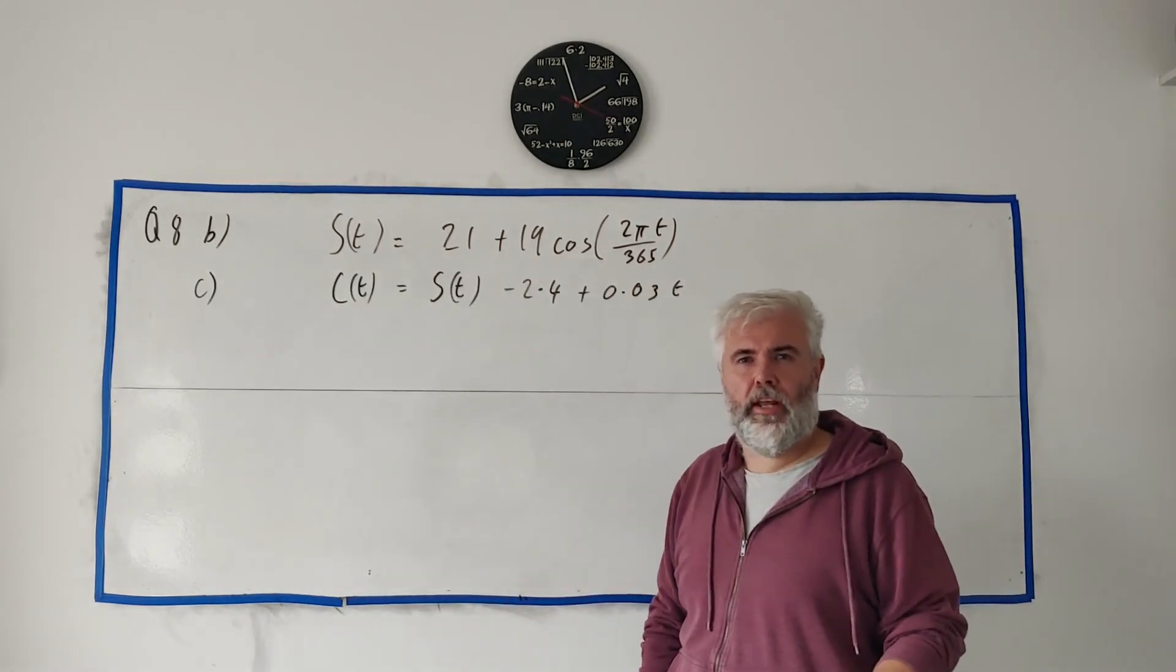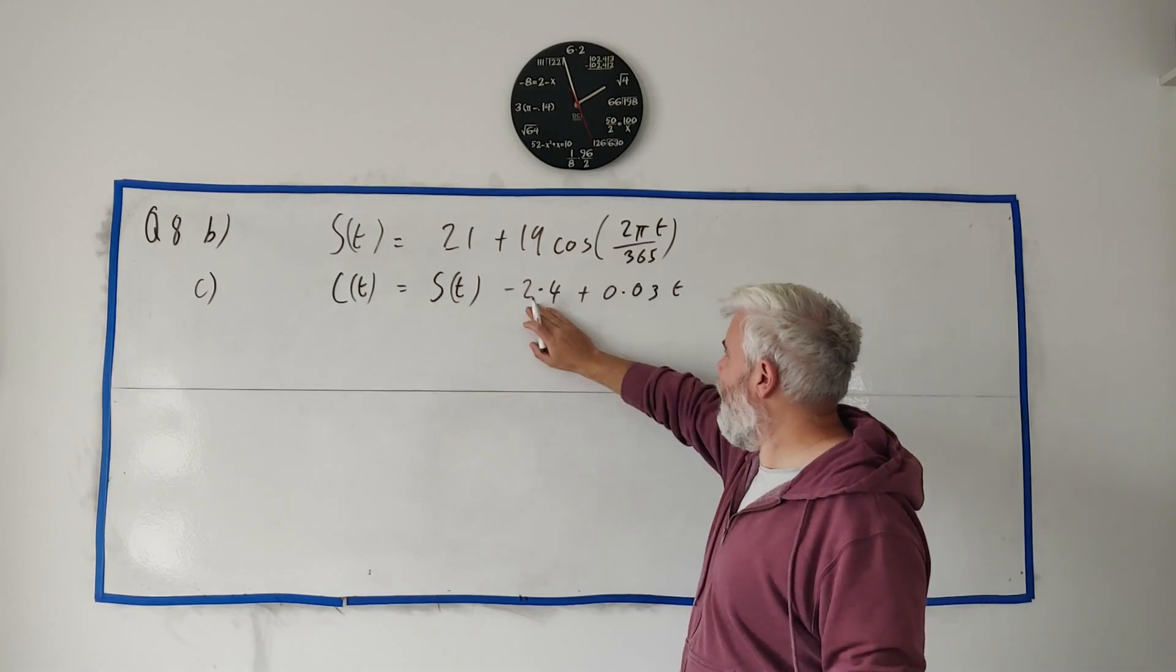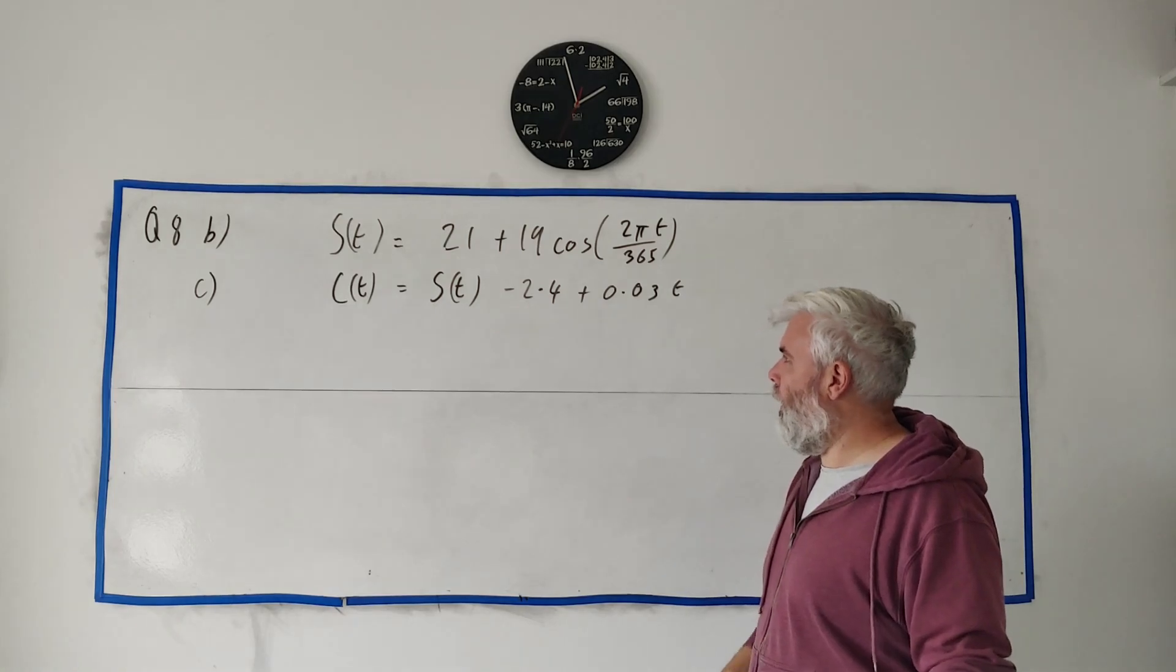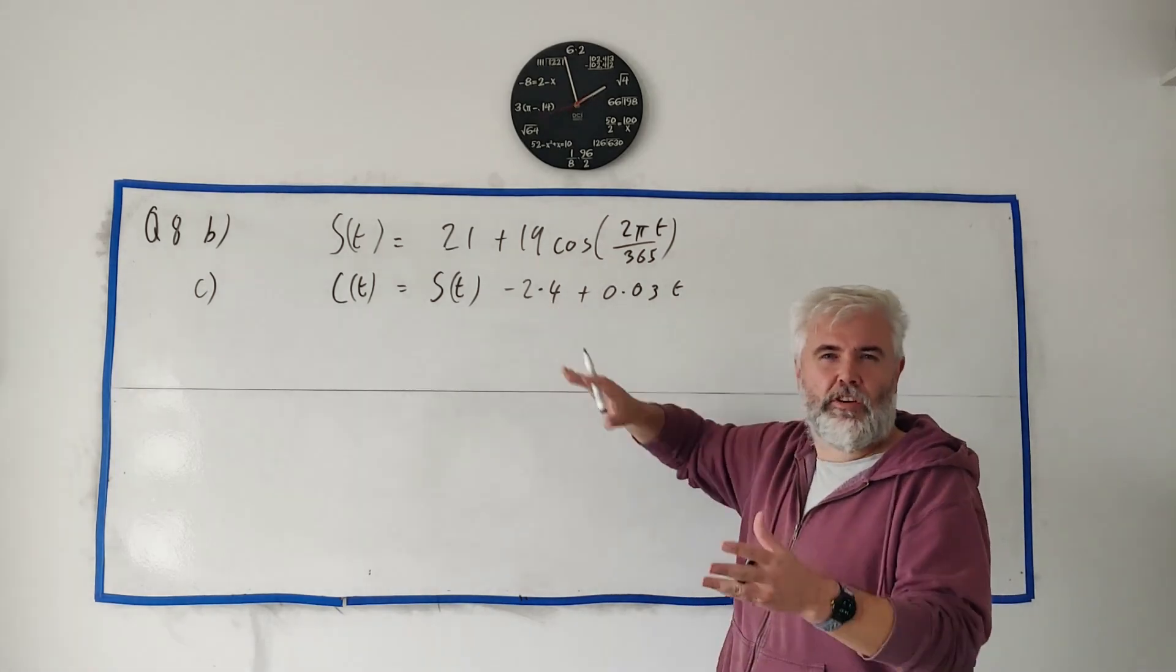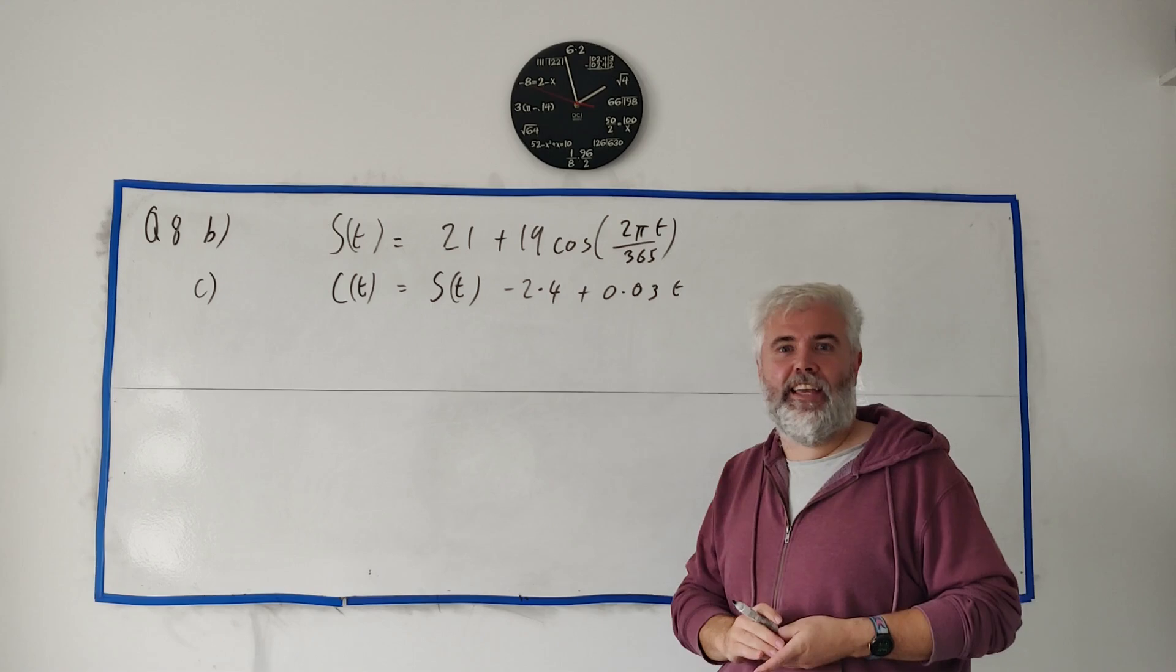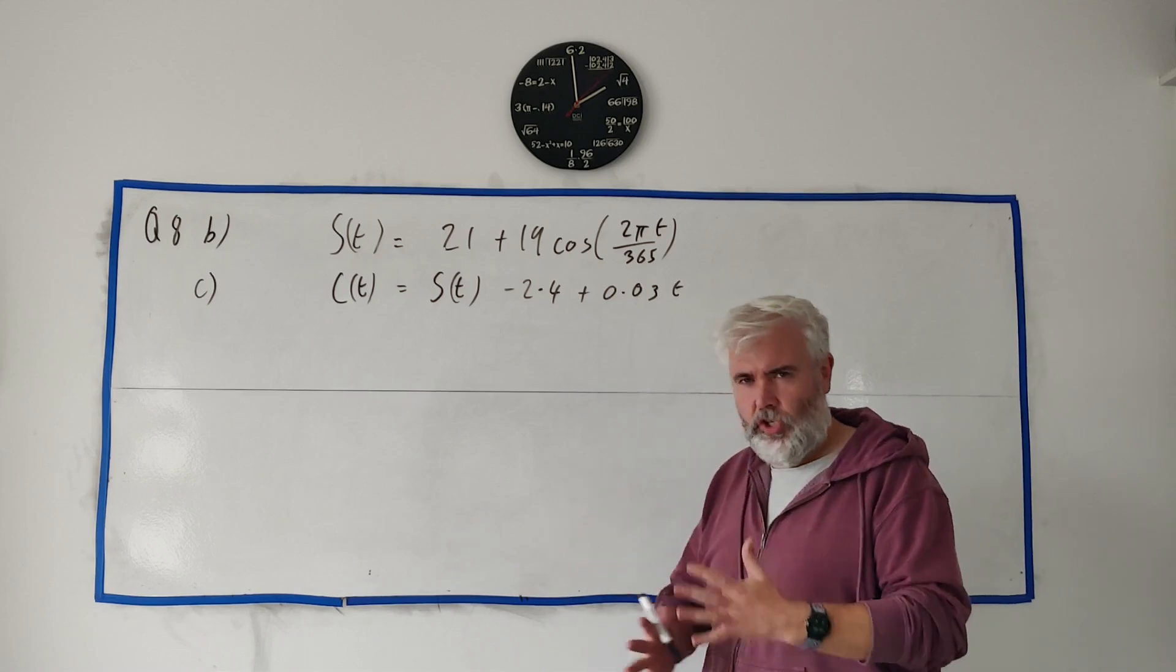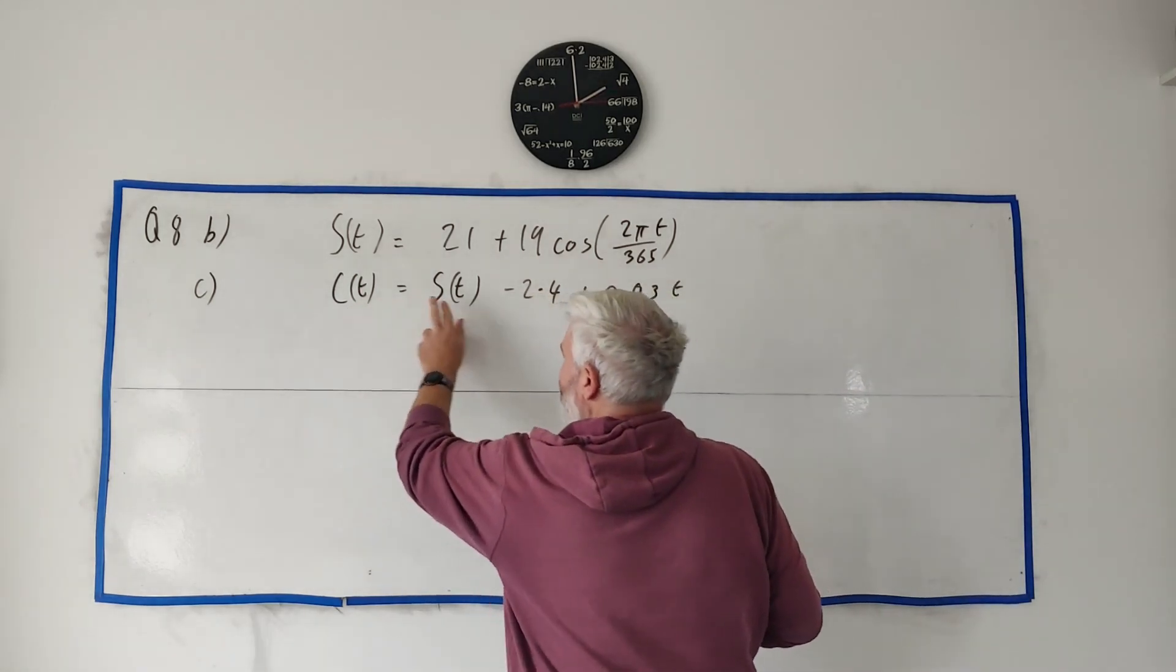Okay, for part C, they introduce a new function, C(T). And C(T) is equal to S(T), which was the previous function, minus 2.4 plus 0.03. Now, when I go through these questions, I obviously do them on the paper first. And I was going to keep my graph from part B and show you how this would look different now. But interestingly, that's actually the question they ask in part D. So I'll skip that as a starting point. So just straight on to what they ask. They ask, find the value for T for which S(T) and C(T) are equal to each other.